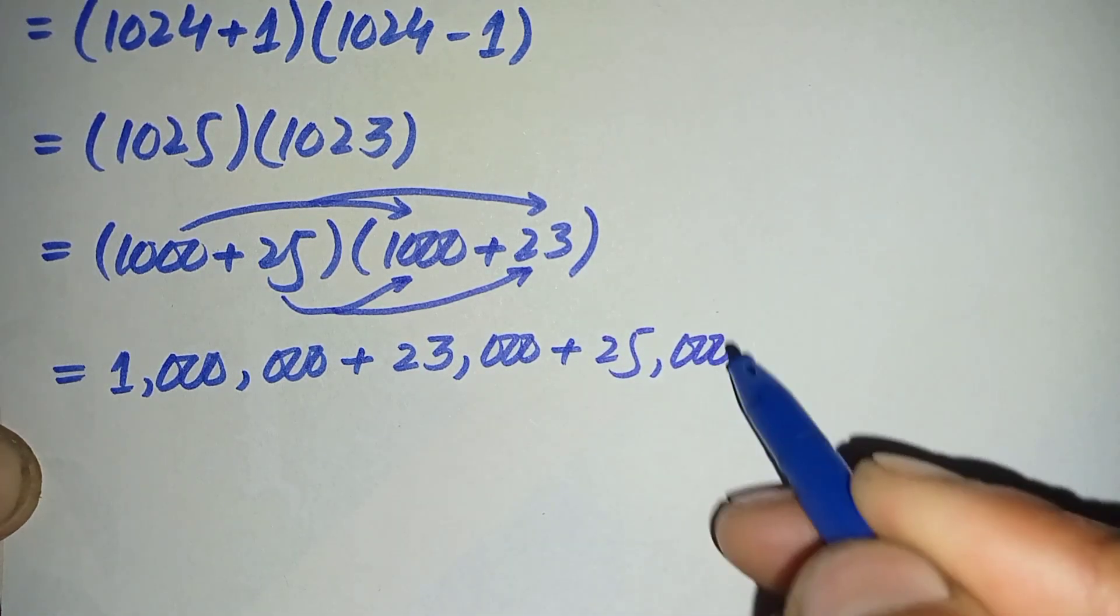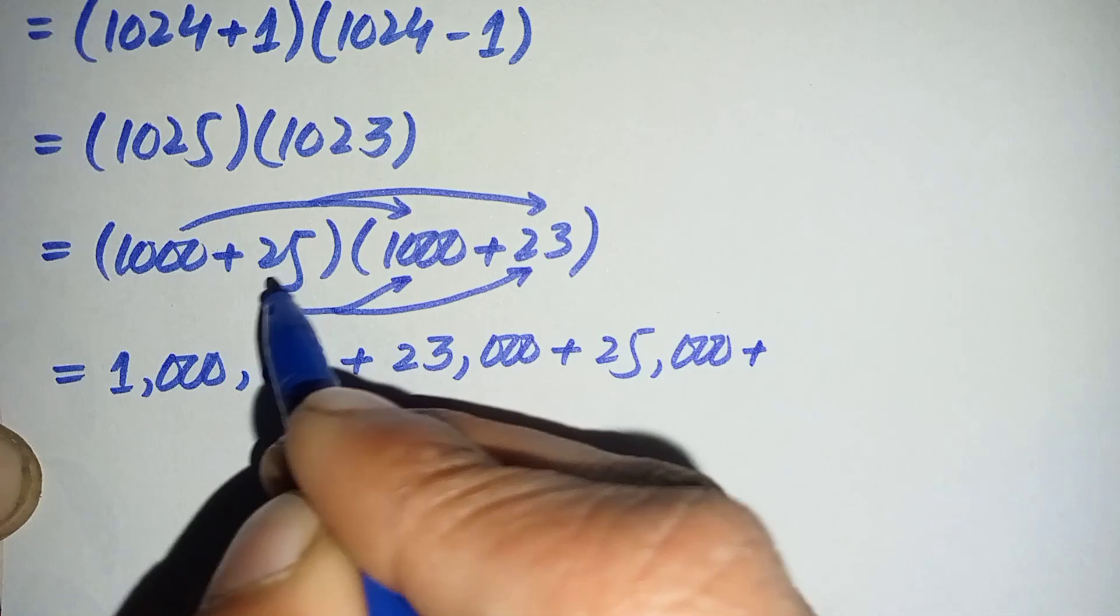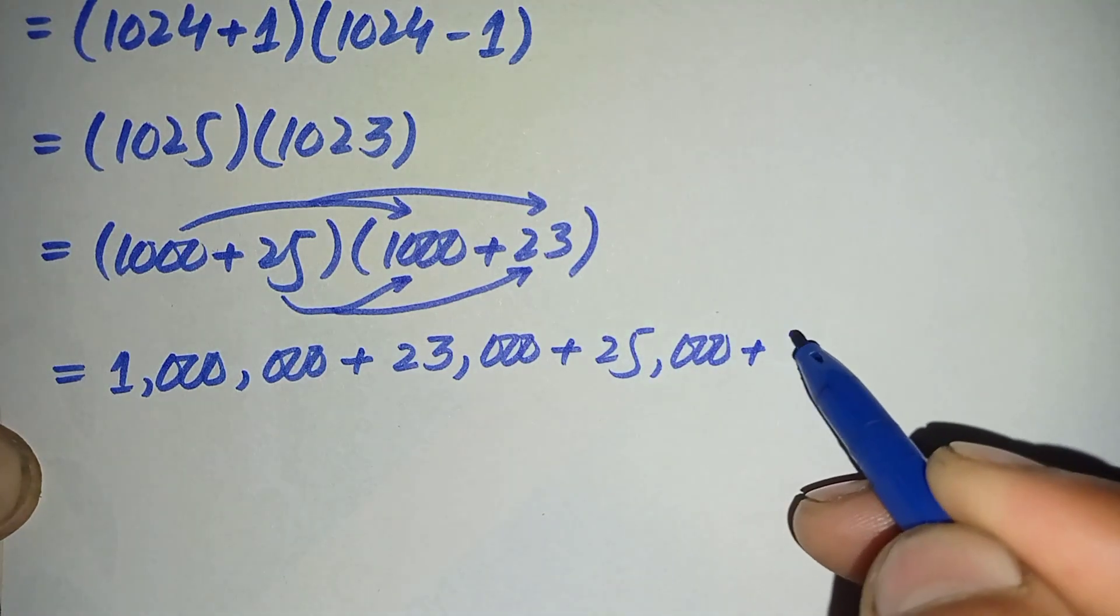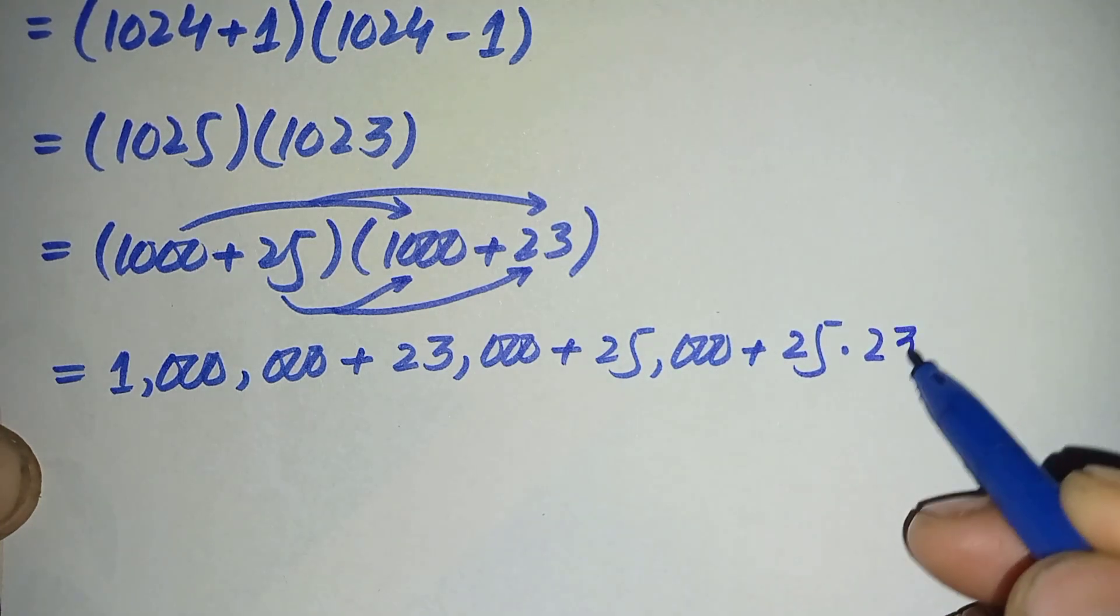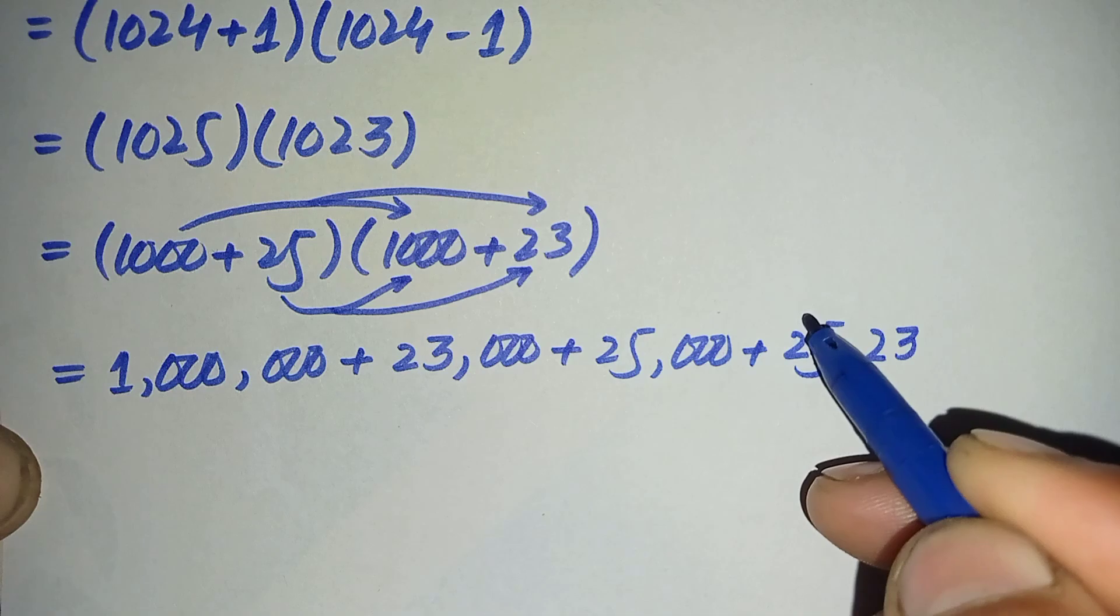25 times 23, if we multiply these two numbers, so here we will get 575.